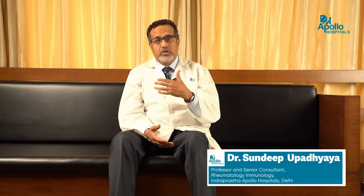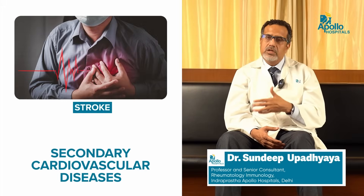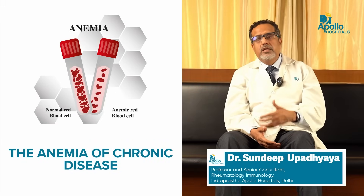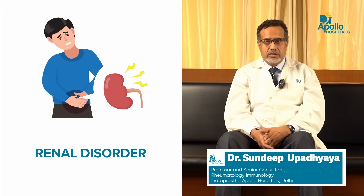There is a second important set of complications arising from the chronicity of the disease. Relentless inflammation in the endothelium of blood vessels causes secondary cardiovascular diseases, stroke, MI, and due to high interleukin production, a form of anemia called anemia of chronic disease. Another complication is a renal disorder caused by deposition of a protein called amyloid in the kidney, which can lead to renal failure in the long run.